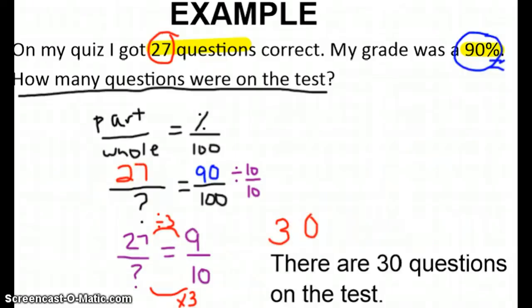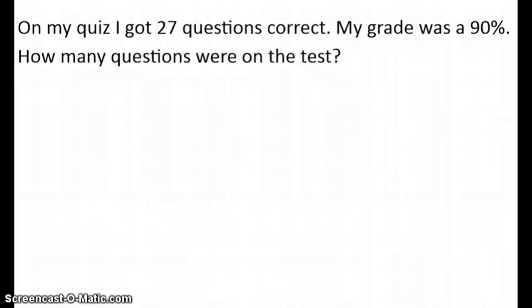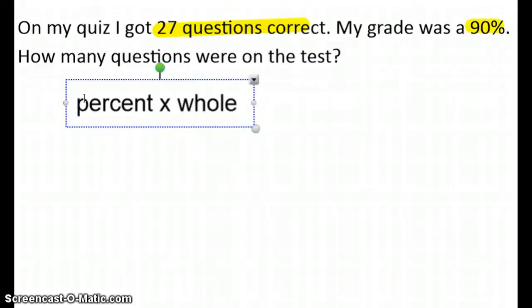Let's look at the next way that we could do it. Same question, though. Again, on my quiz, I got 27 questions correct. My grade was a 90%. How many questions were on the test? So the second way that we could do it is with that formula. Percent multiplied by the whole is equal to the part.